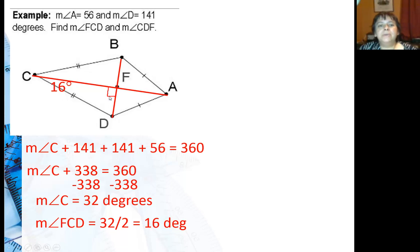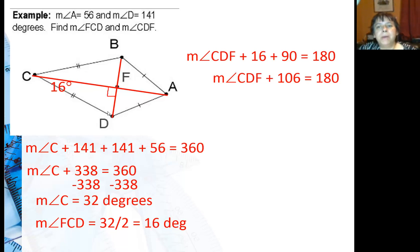Now I'm going to add my other diagonal. And I know diagonals create 90 degree angles. Well this is just a triangle here, and I can say that this angle, which is the other one I'm looking for, CDF, these three must add up to 90. So I combine my like terms, subtract 106 from both sides, and I get CDF is 74 degrees.